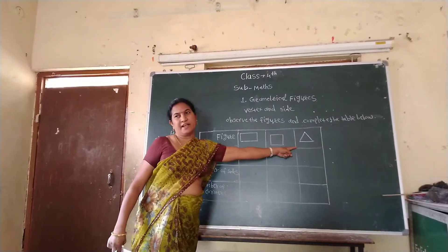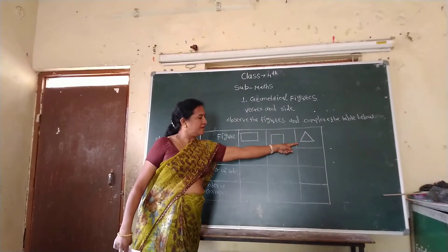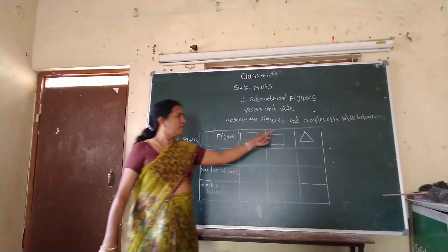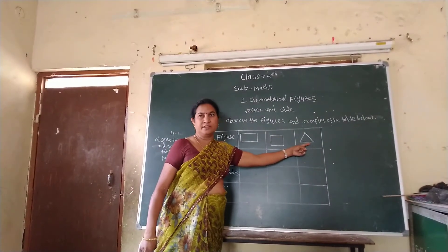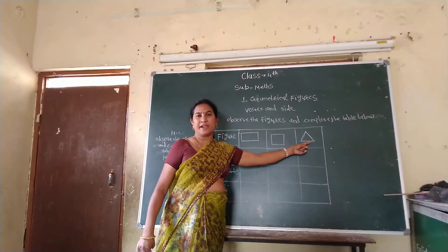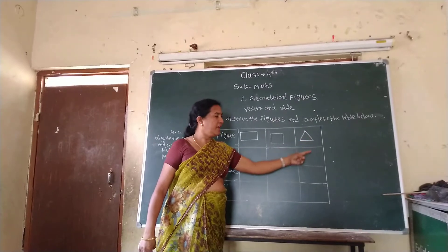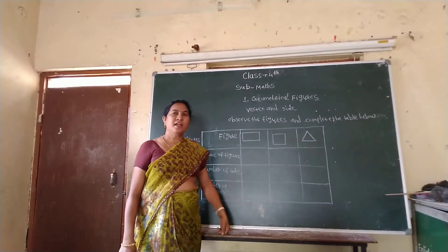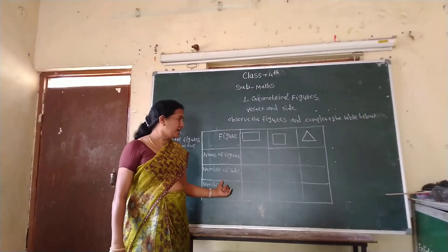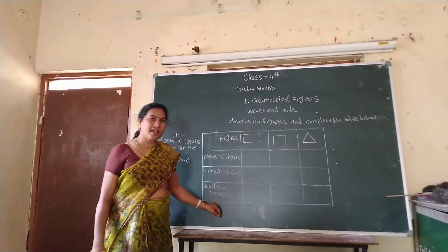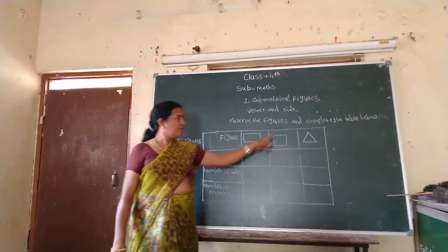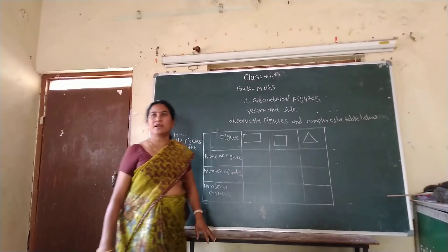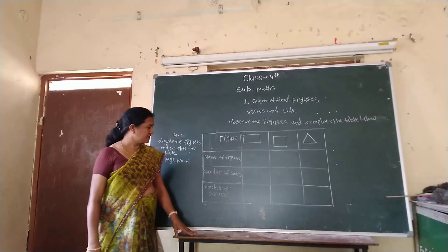This is a triangle. Kitnay side hai? One, two, three. Kitnay sides? One, two, three. Aur corner bhi kitnay hai? How many corners? Kitnay corners hai? One, two, three. Three corner hai.